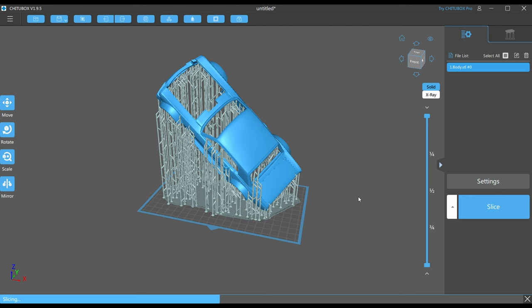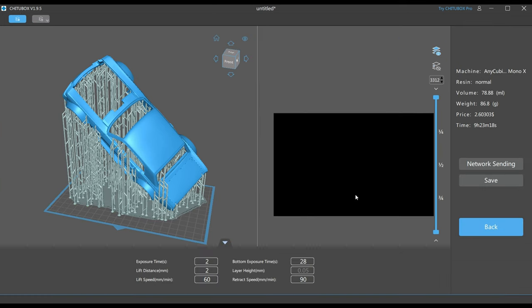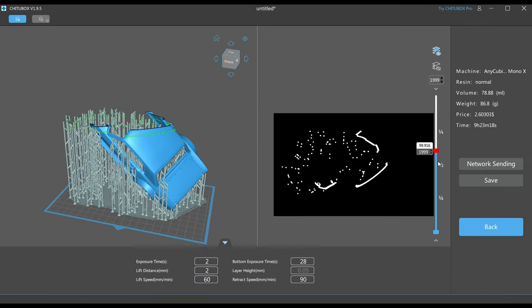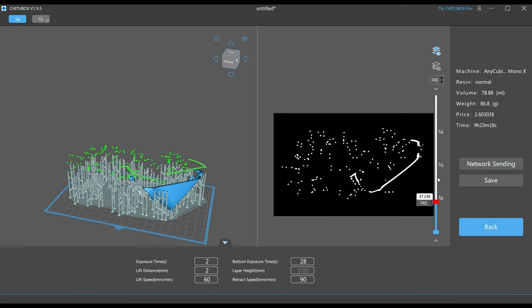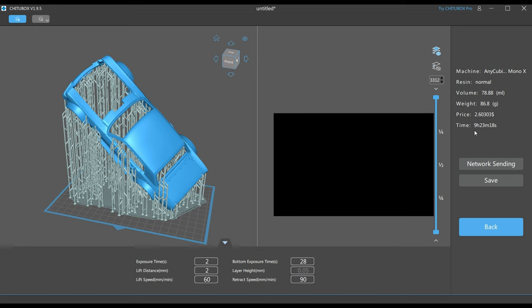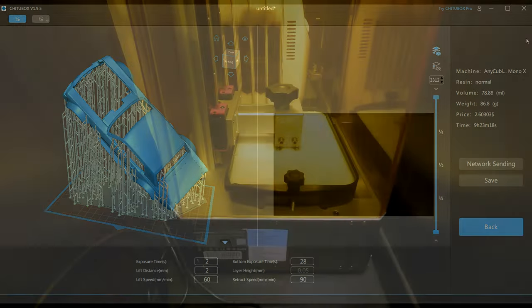I went with standard settings with eight level of anti-aliasing. It's generating now nine hours, 24 minutes. It's usually will be longer on any cubics. With one plate of resin, it's printed pretty well.